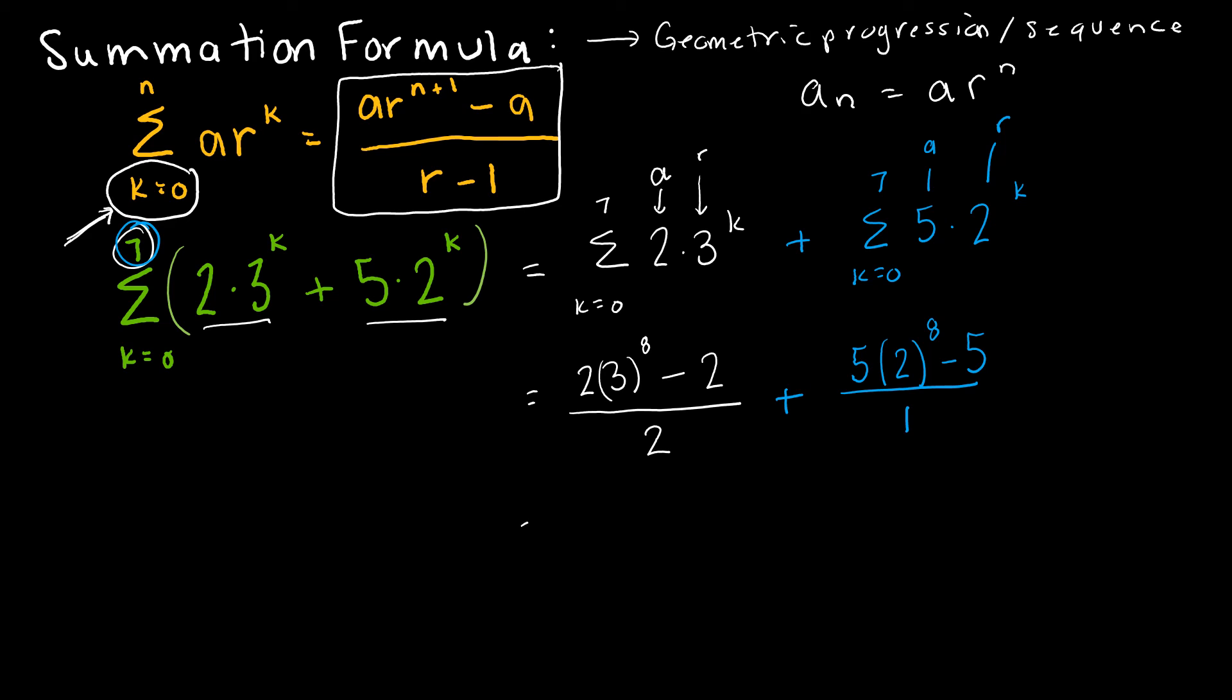So from here, I'm just going to use a calculator. I'm going to take 2 times 3 to the 8th, subtract 2. This gives me 13,122 minus 2 over 2, which turns into 6,560. Again, using a calculator, 5 times 2 to the 8th minus 5 over 2 minus 1 gives me 1,275. And when I add those values together, I end up with 7,835.